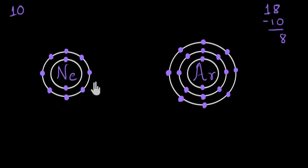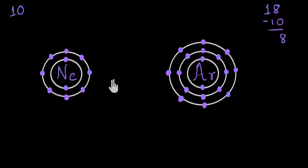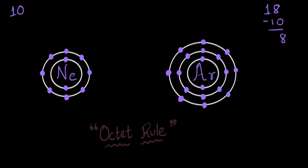In fact, all noble gases except helium have eight electrons in their outermost shell. This made us think: is it because of this special arrangement of electrons that noble gases are inert in nature? And yes, this came out to be somewhat true. We noticed that other elements were participating in reactions — losing, gaining, or sharing electrons — just to be able to attain eight electrons in their valence shell. We gave this phenomenon a name: the octet rule. This states that generally, elements will participate in reactions to attain eight valence electrons.